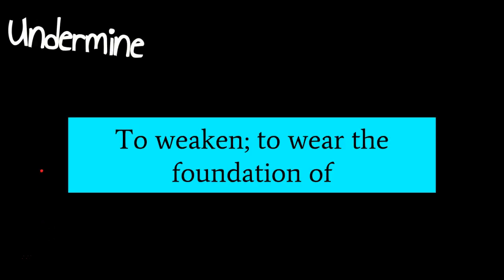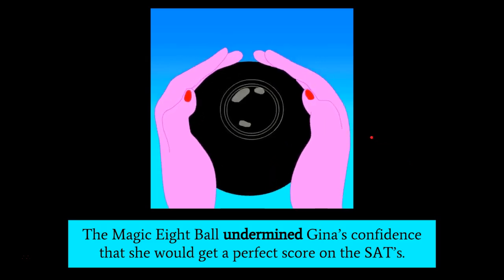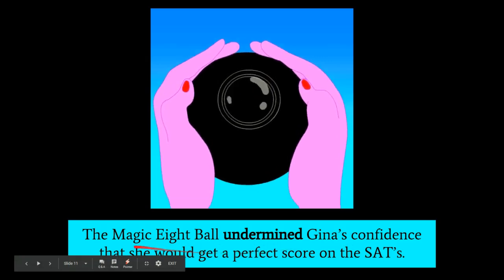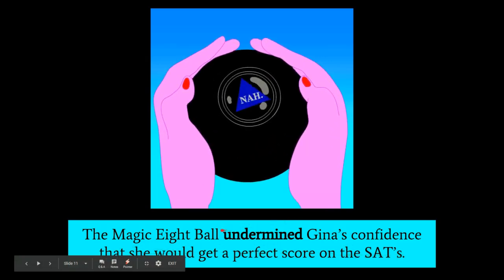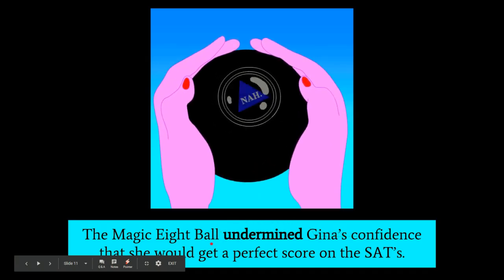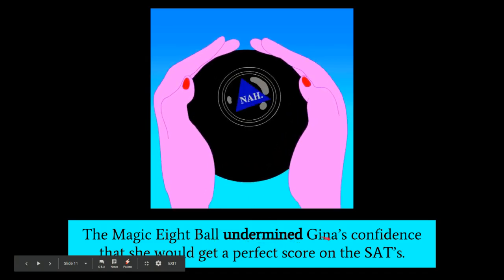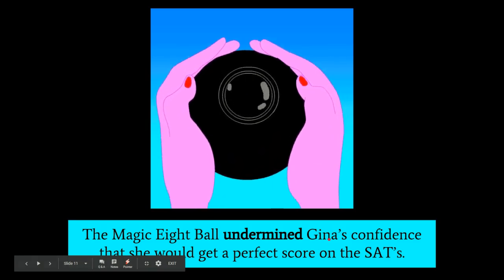For our next word, we have undermined — to weaken, to wear the foundation of. So undermine is a verb, and we see in the sentence: the magic eight ball undermined Gina's confidence that she would get a perfect score on the SAT. The tenses can change — you have undermine, undermined, undermining. When you undermine, you inflict some kind of harm upon another person or thing.